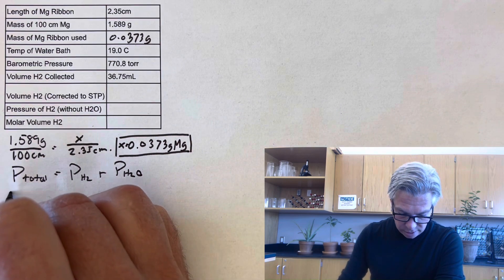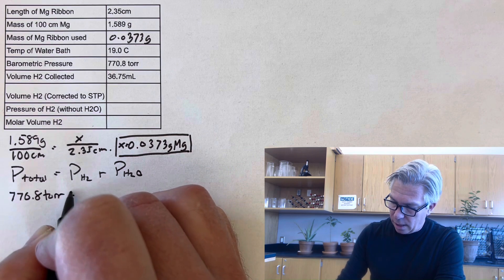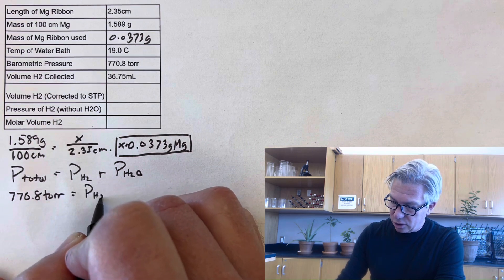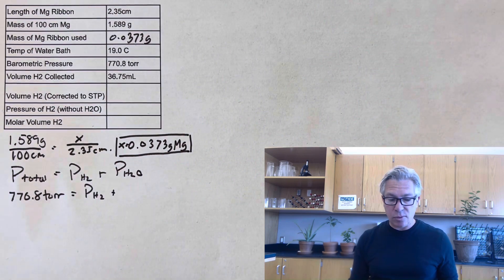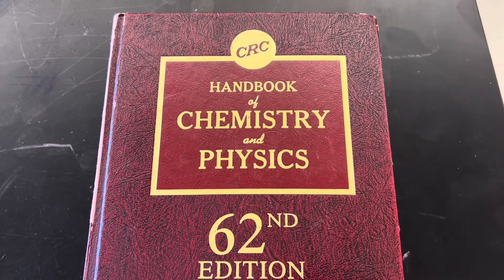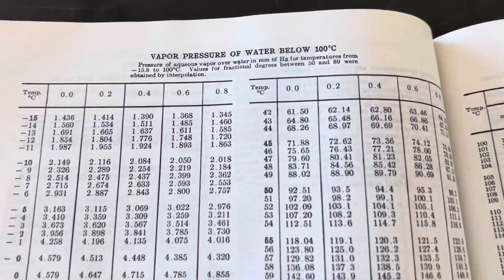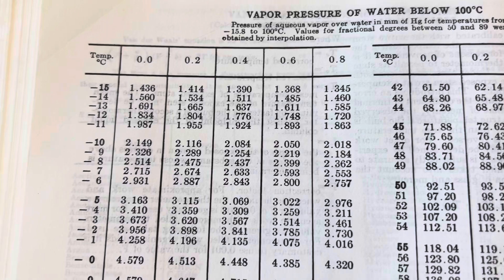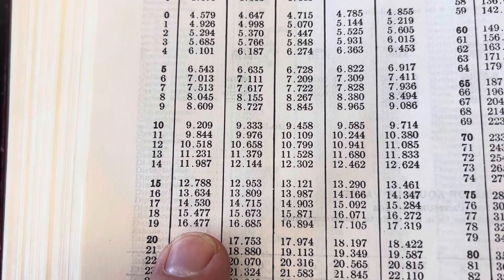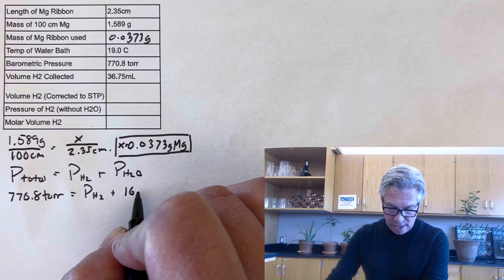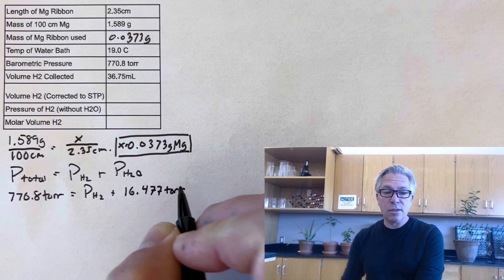So let's put in the total here. So this is my correction factor. And that'll be equal to the pressure of hydrogen plus the pressure of water. Now, what is the vapor pressure of water? I went to a handbook, the CRC handbook of chemistry and physics. It's awesome. And looked it up in a table of vapor pressures at 19 degrees Celsius, which is where I'm at. Water can be expected to add 16.477 torr to the total pressure.